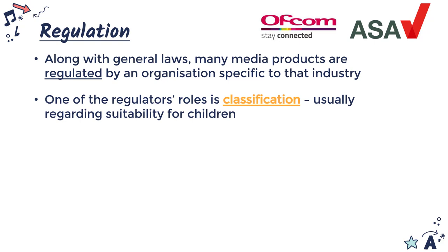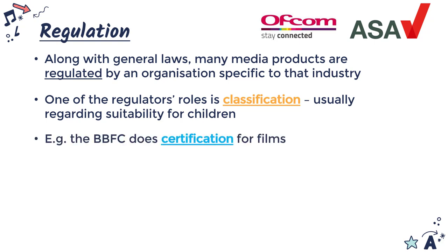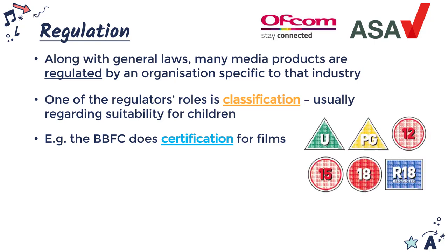Classification is usually applied to — or at least we care about — how it relates to suitability for children. So trying to figure out what adverts are suitable to be shown on kids' TV, or what films are suitable to be shown during the day. The regulator which does this for films, at least in the UK, is the BBFC — the British Board of Film Classifications — and it gives out certificates based on the age rating they believe applies to that film.